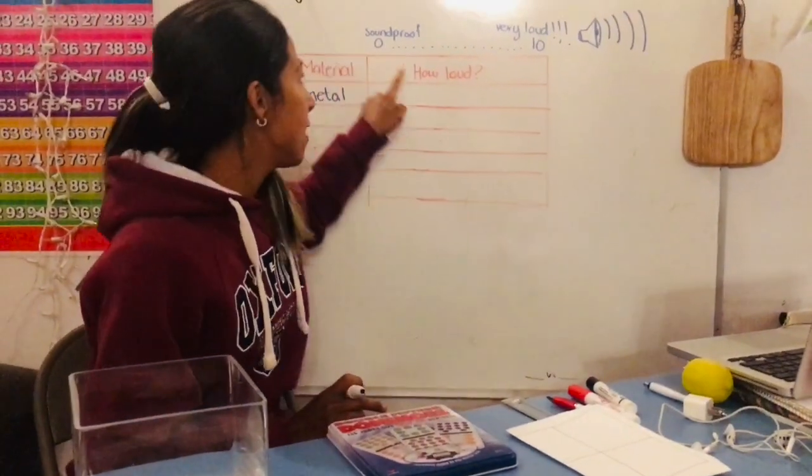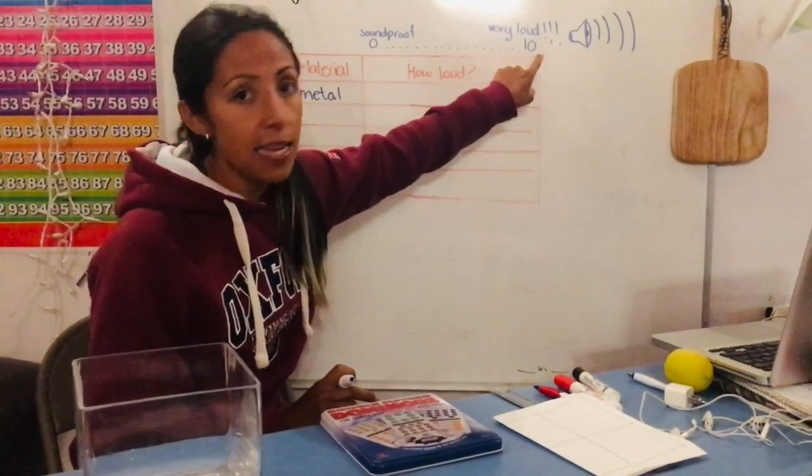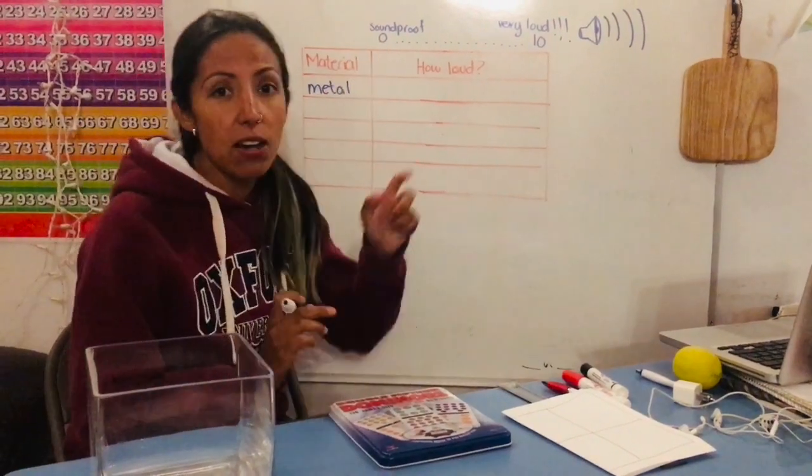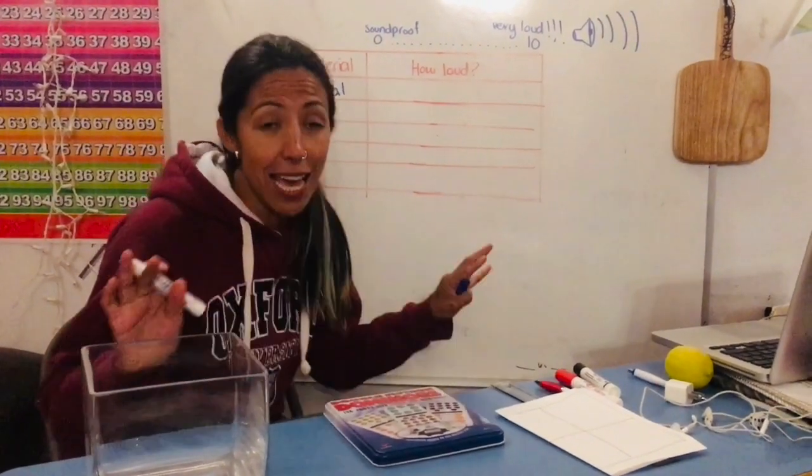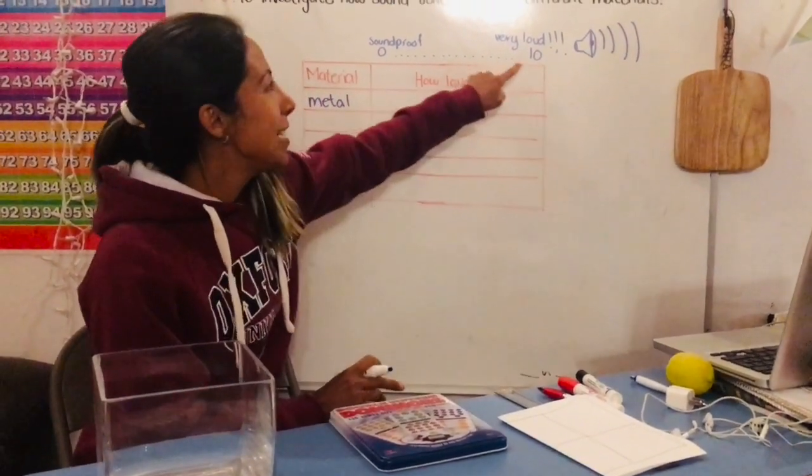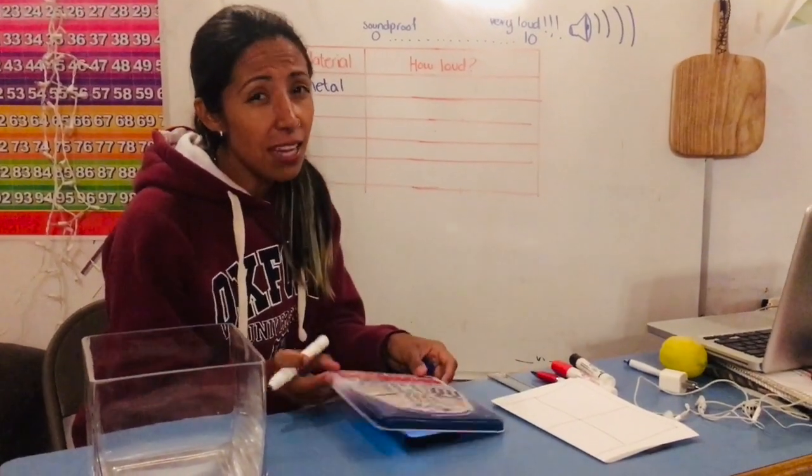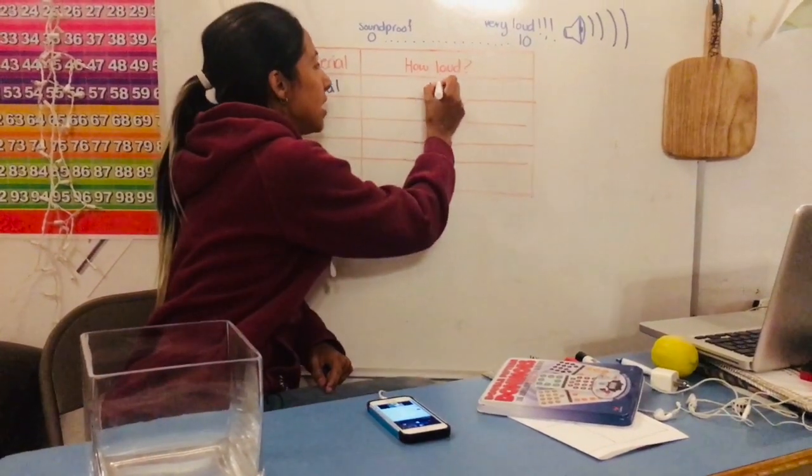So you're going to have to rate the sound from 0 to 10 where 0 is soundproof which means you can't hear the siren anymore and 10 is really loud. And I think with metal the sound was pretty loud. So I'm going to give it a 10.